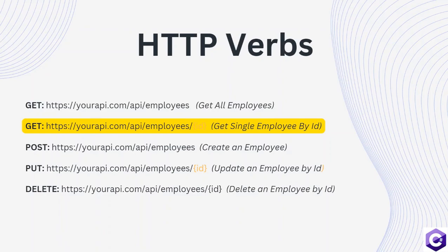GET can be used in two different ways: one, to get all the employees, and two, to get a single employee by passing their unique identifier after the employees segment of the URI.